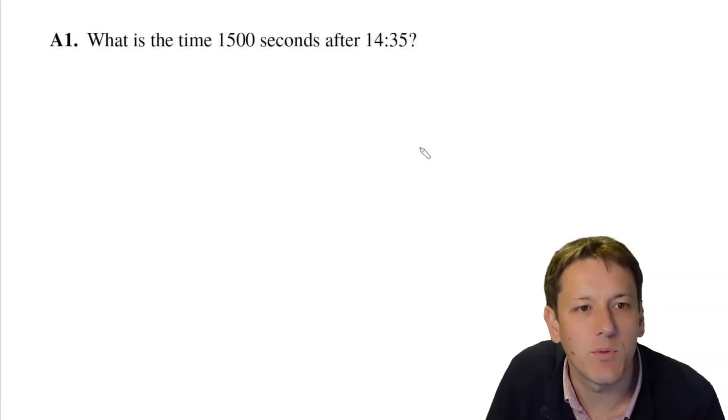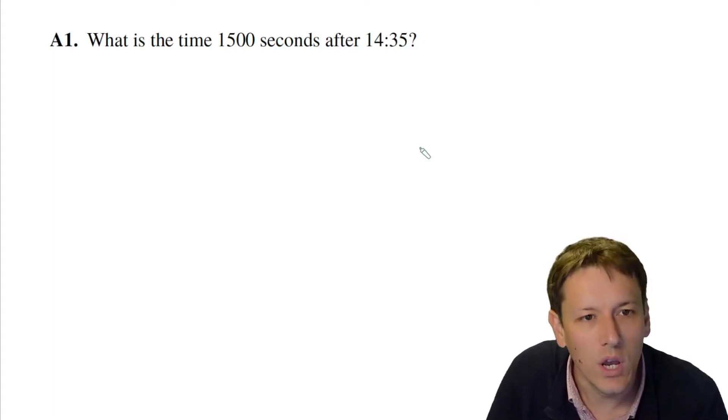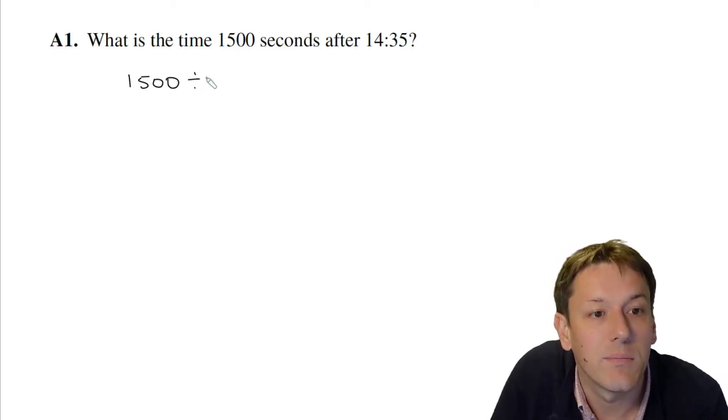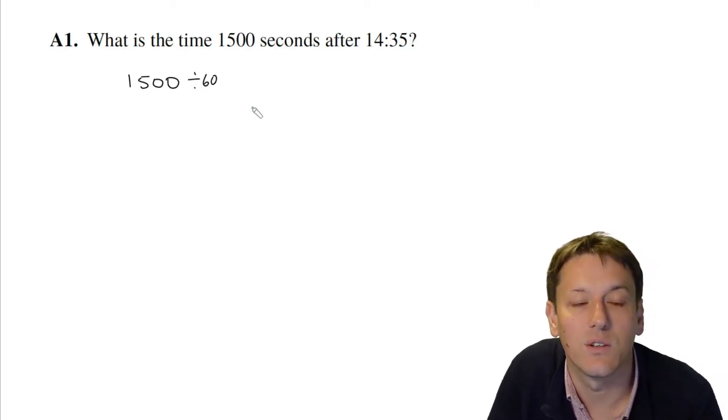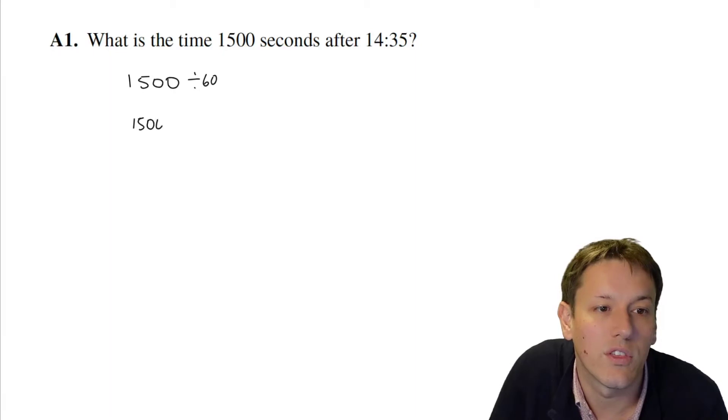What is the time 1,500 seconds after 14:35? So we want to write 1,500 seconds in minutes. There's 60 seconds in a minute, so I need to do 1,500 divided by 60. You could either do that as an ordinary long division, or I think it's often quicker to think of these as simplifying down fractions. So I can divide top and bottom by 10, and then I've got 150 divided by 6.